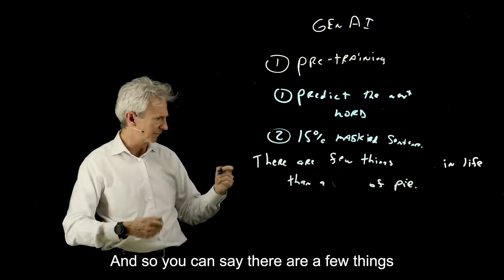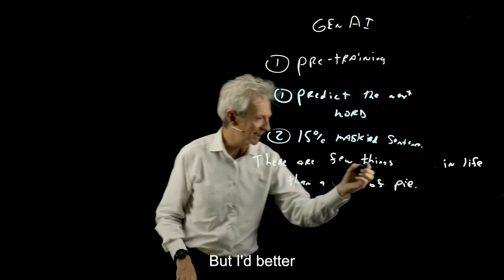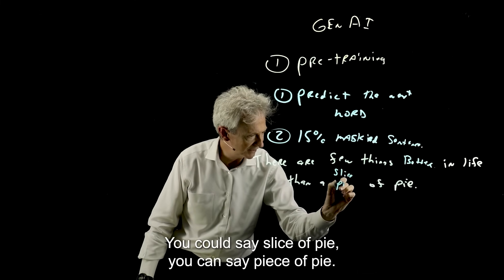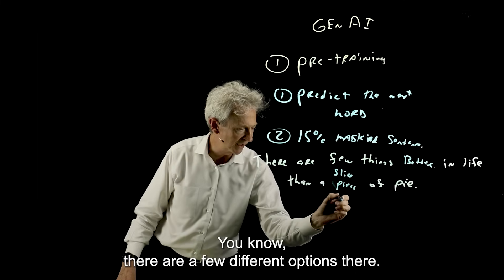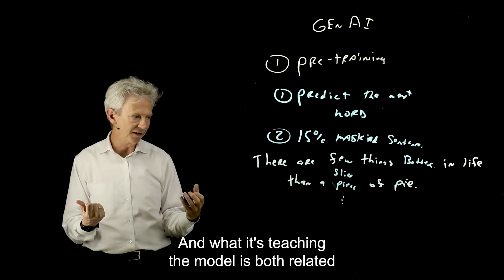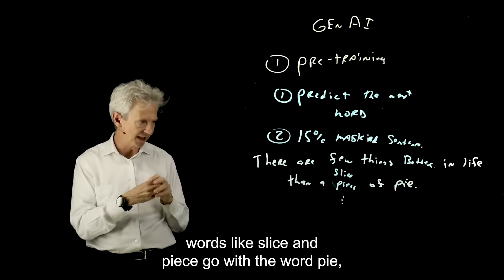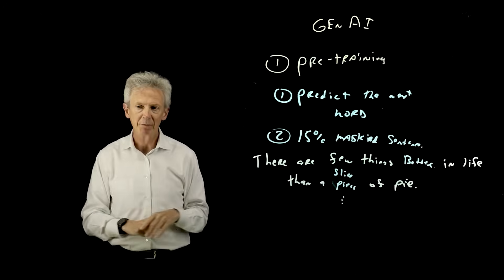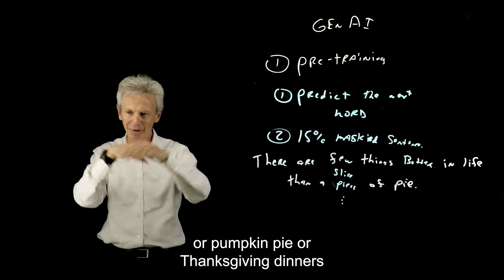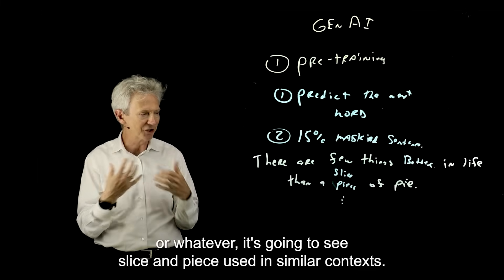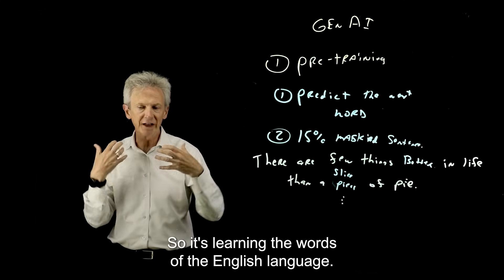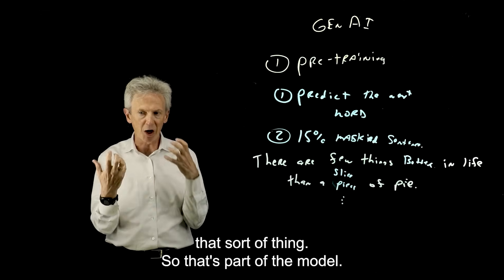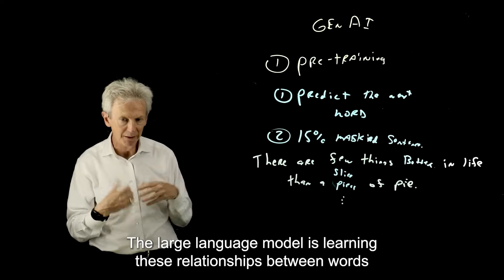And so you can see there are a few things. More fulfilling, I guess, is two words. But better might be one of the most logical guesses. But you can imagine the second one. You could say slice of pie. You can say piece of pie. There are a few different options there. And what it's teaching the model is both related words like slice and piece go with the word pie. But also the slice and piece are similar words. Like if you just trained on this one sentence, you wouldn't find that out. But if you train on a lot of sentences that might talk about cheesecake or pizza or pumpkin pie or Thanksgiving dinners, it's going to see slice and piece used in similar context. So it's learning the words of the English language, which ones are kind of synonymous, pretty close, related to each other. So that's part of the model, the large language model is learning these relationships between words and what they mean.